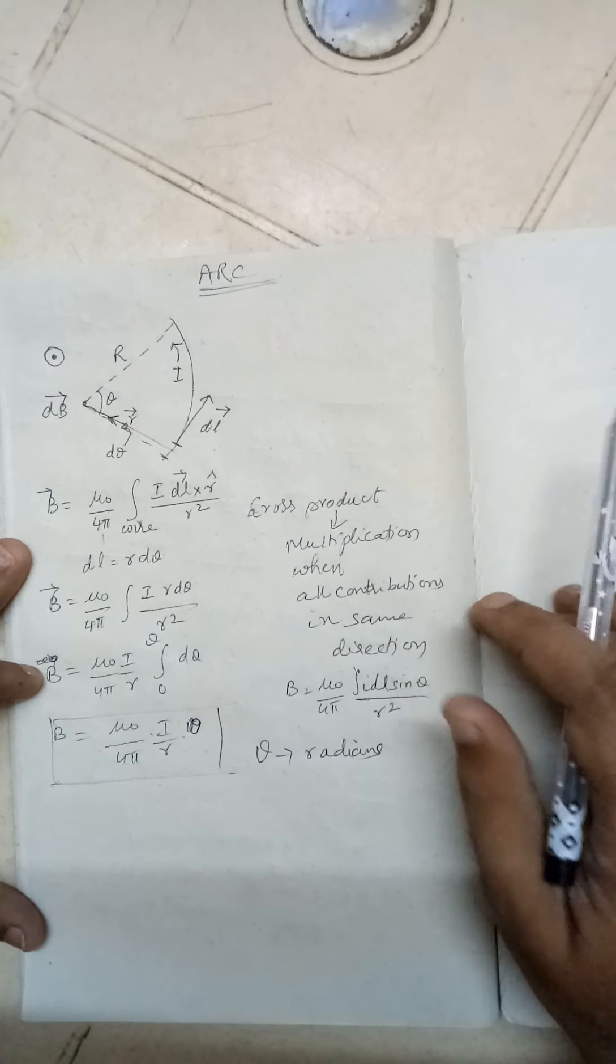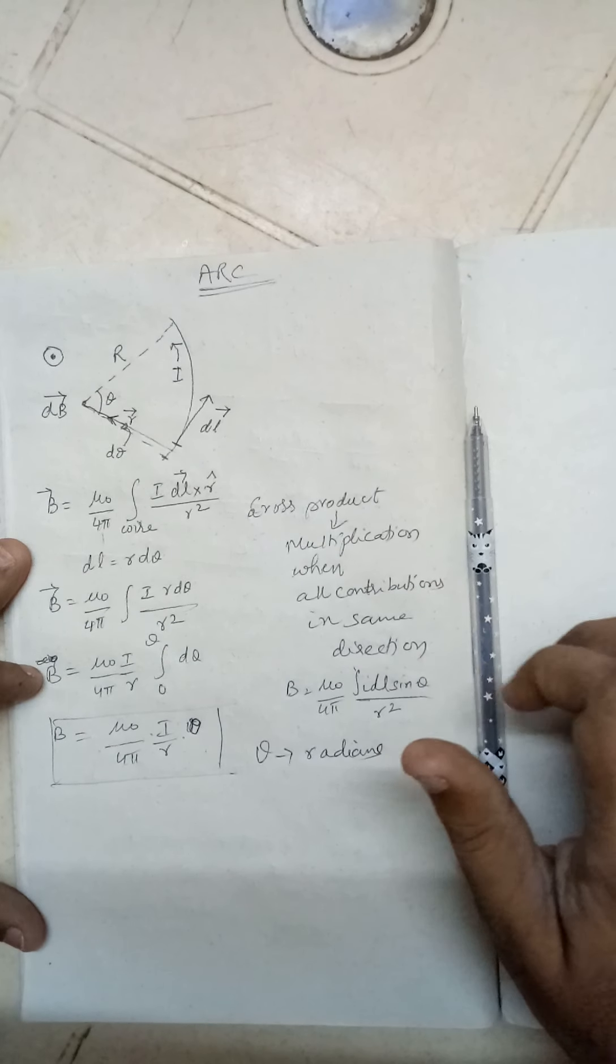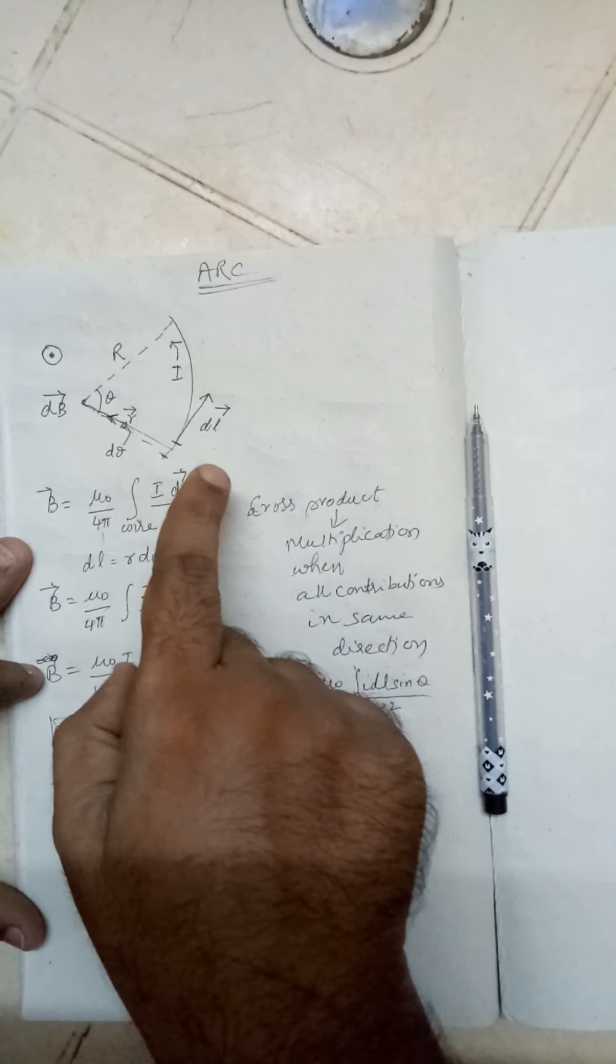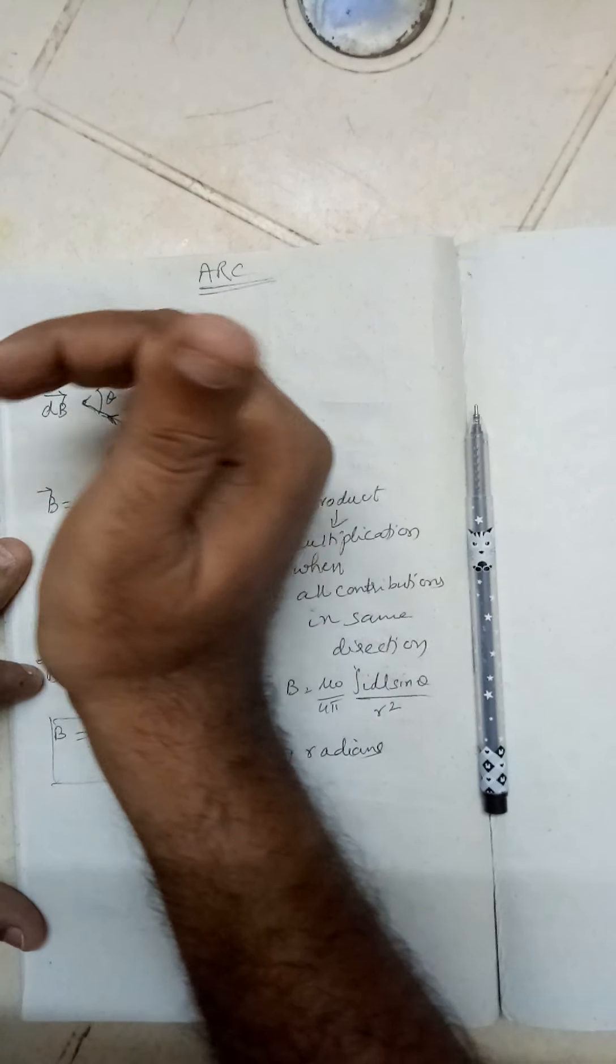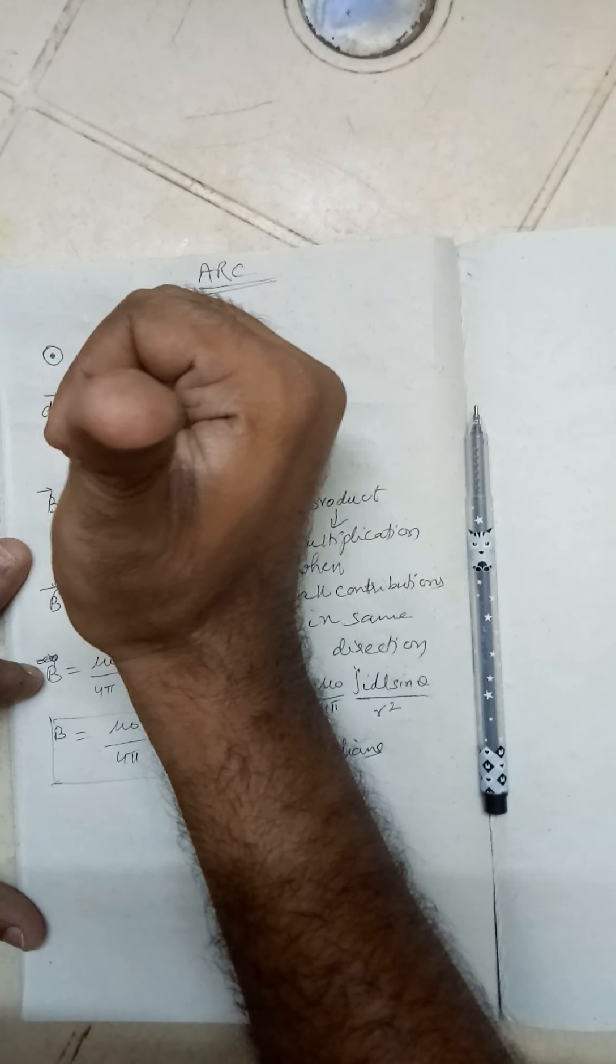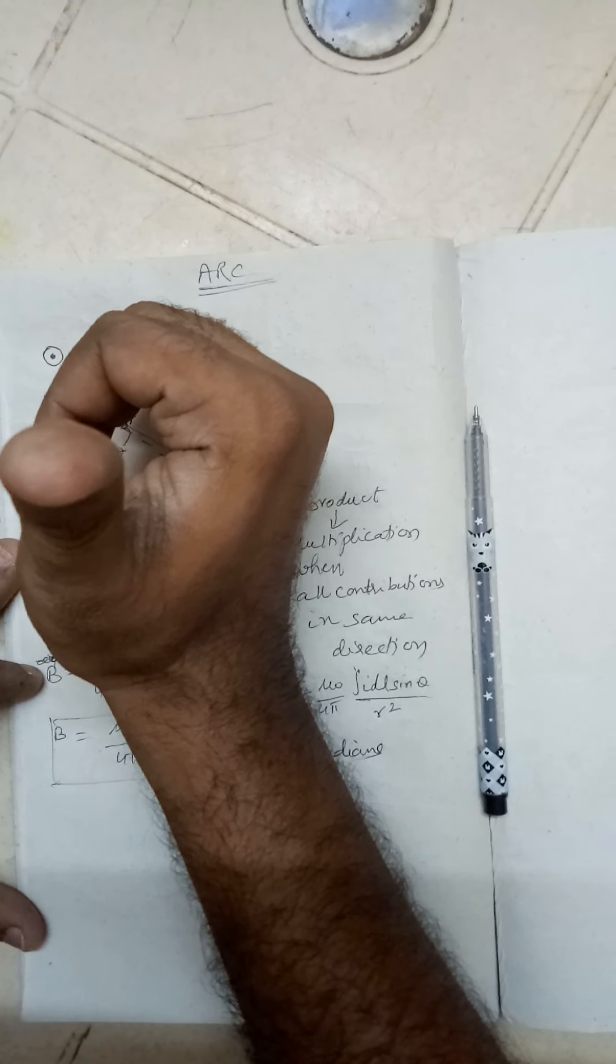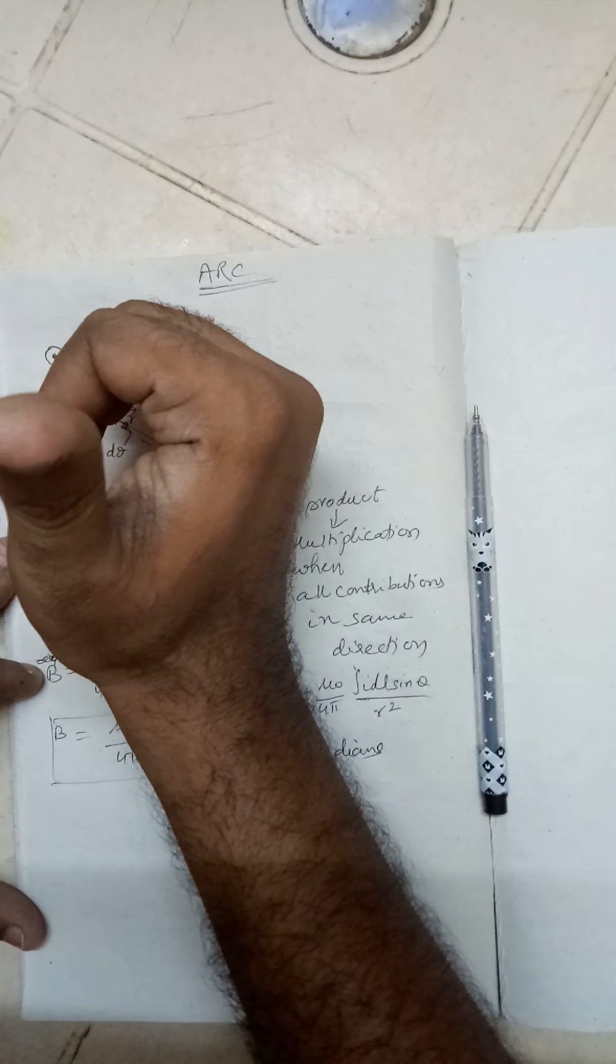You can apply the right-hand thumb rule. You can see I have to curl my fingers from dl to r, it will be like this. So the thumb will show the direction of the magnetic field.